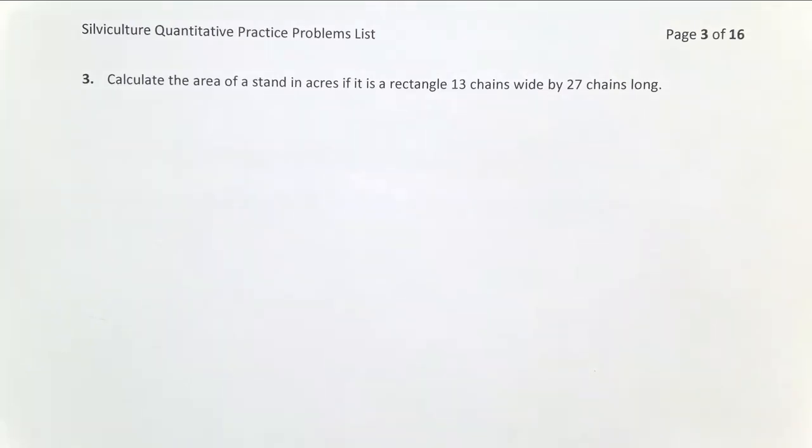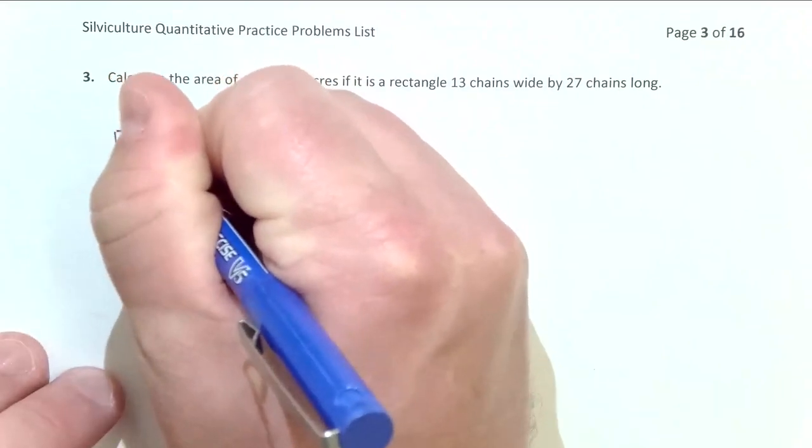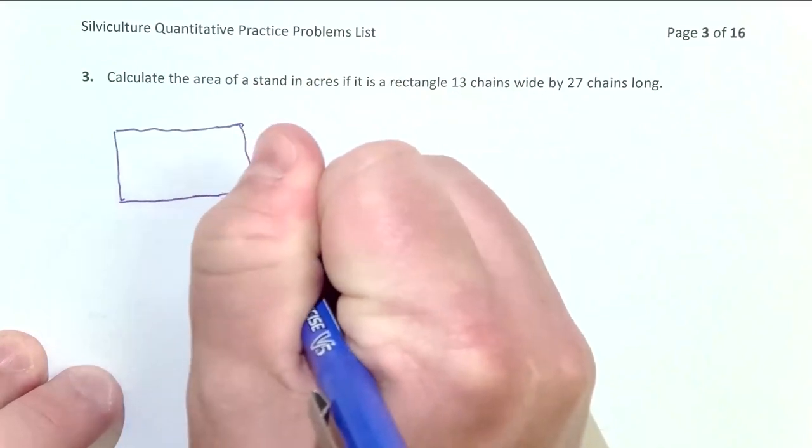In our next problem, we're going to calculate the area of a rectangular stand, and we have its length and width in chains. Here we don't have to do much manipulation of our equation as we did in problem number one.